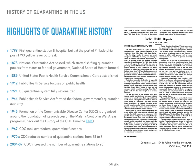It wasn't until 1944 that the Public Health Service Act formed the federal government's Quarantine Authority. This act gave the U.S. Public Health Service responsibility for preventing the introduction, transmission, and spread of communicable diseases from foreign countries into the United States. It also broadened the scope of the Commissioned Corps, allowing the commissioning of nurses, scientists, dieticians, physical therapists, sanitarians, and veterinarians to be part of the effort to reduce the spread of disease.